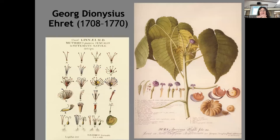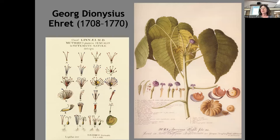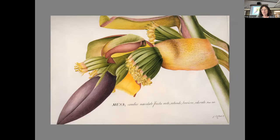Then there's Georg Dionysius Ehret, whose work is from the 1700s. Ehret illustrated for the botanist Linnaeus, who established the classification system for plants — how you identify plants by their reproductive parts. On the left is an illustration he did for that system, and on the right you can see his beautiful work, including the calligraphy.